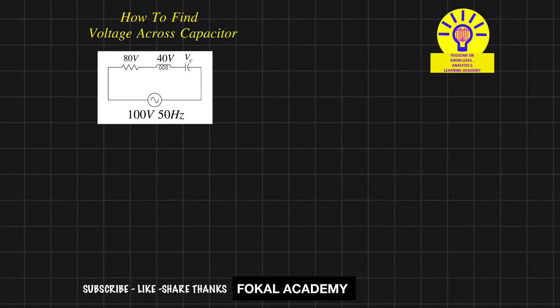In this problem, we need to find the voltage drop across the capacitor. Here a series RLC circuit is given with a 100V source at 50 Hertz. The resistance voltage drop is 80 volts and the voltage drop across the inductor is 40 volts.